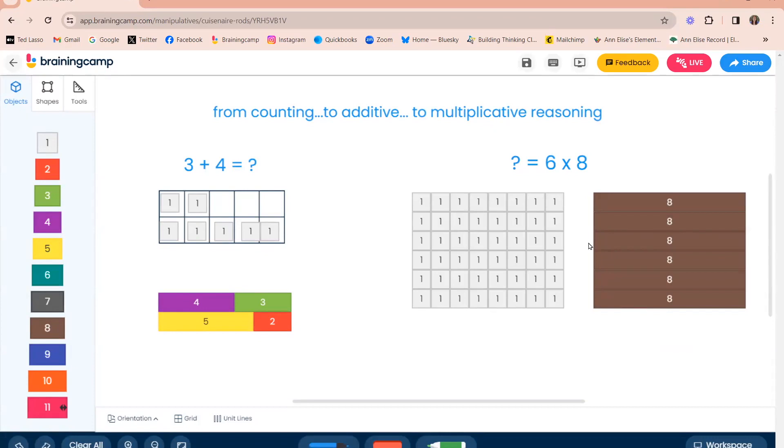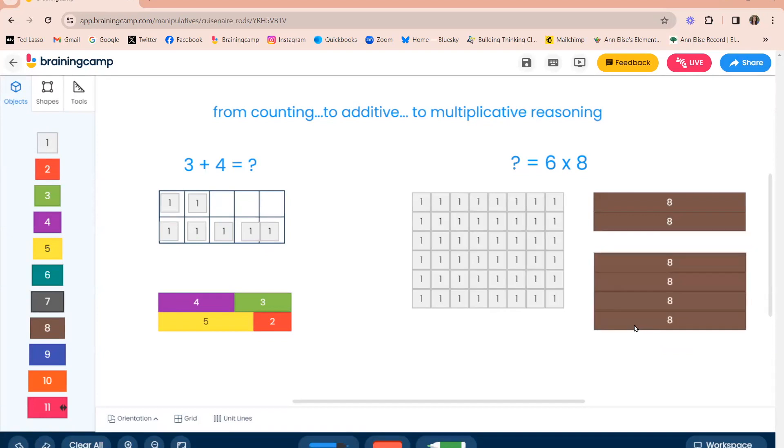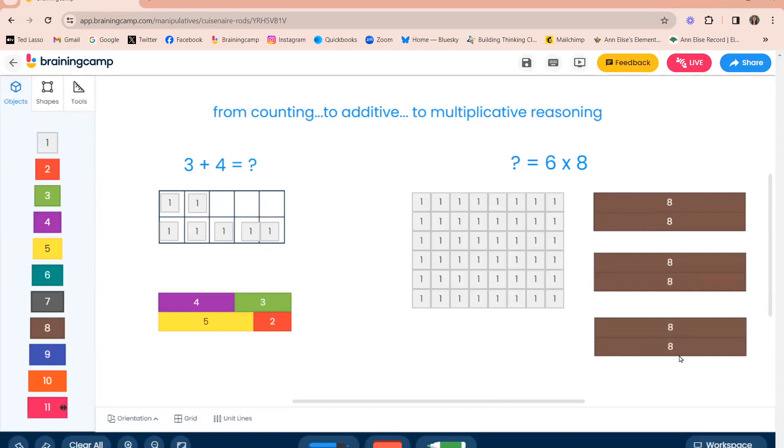If they know that two eights is 16, can we use that to relate to figuring out what three sets of those are? And in fact, this is a precursor to double and halving, which is a phenomenal strategy that we can double one of the factors as long as we half the other. We can make half as many groups as long as we double the size in each group. So six times eight can become three times 16, which is what students are doing when they're doing the repeated addition. So we want to connect that in that moment to the multiplicative reasoning.